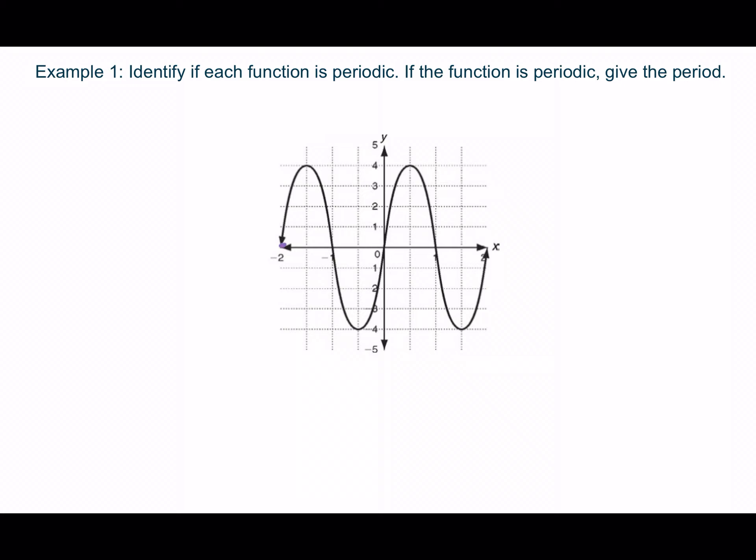I'm going to start here at the end. So it starts at the x-axis, it goes up, down, and then back up. So it ends right here. Notice how it makes this shape that I've highlighted in purple. The reason I know this is periodic is because right where it ended, I can now start and make that same exact shape again. Up, down, and back up. See how it makes the same shape twice? That means that yes, this function is periodic.